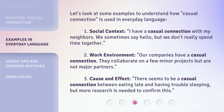Let's look at some examples to understand how casual connection is used in everyday language. 1. Social Context: I have a casual connection with my neighbors. We sometimes say hello, but we don't really spend time together. 2. Work Environment: Our companies have a casual connection. They collaborate on a few minor projects but are not major partners. 3. Cause and Effect: There seems to be a casual connection between eating late and having trouble sleeping, but more research is needed to confirm this.